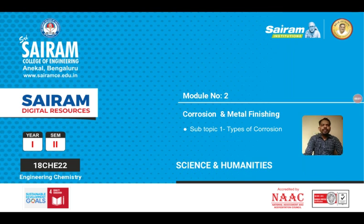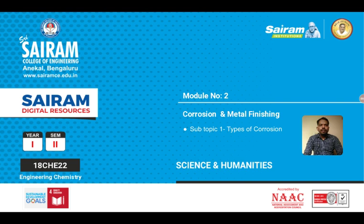Good morning. In our previous discussion, we covered what is corrosion and types of corrosion. Corrosion is broadly classified into dry corrosion and wet corrosion. We took the example of the Taj Mahal to discuss dry corrosion, and we discussed wet corrosion along with the electrochemical theory of corrosion. We saw that if a metal acts as an anode it undergoes corrosion, and if it acts as a cathode it is protected from corrosion.